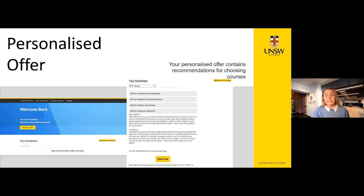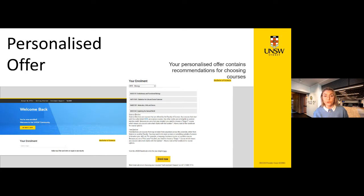A course is the individual sequence of learning and teaching. You will enrol into courses each term, and these combine to complete your major and programme. A core course is a compulsory course within a programme and must be completed to meet the programme requirements. Depending on your programme, you may have a combination of core courses, faculty-specific electives, free electives (courses taken from any faculty), and general education courses, which must be outside of your faculty.